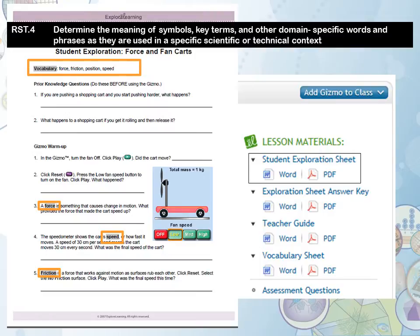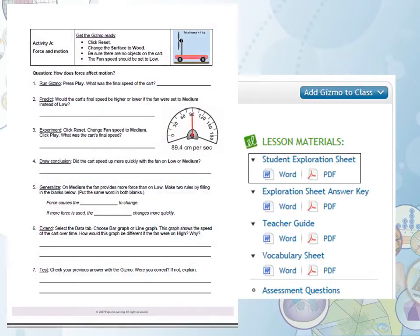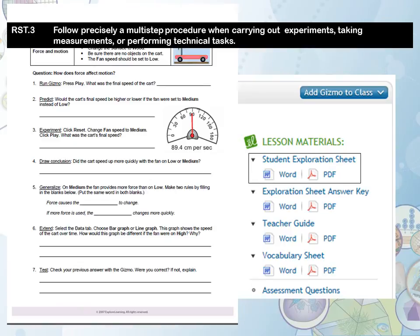Preferably matched one-to-one at a computer workstation, the activities that follow, which are built upon cognitive complexity, support RST3, in which students will be challenged to precisely follow the multi-step procedures outlined in the activity in order to interact with the gizmo.